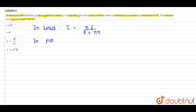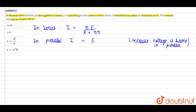In parallel, I equals E divided by R plus r by N, because voltage is the same in parallel.